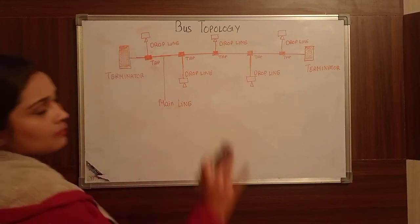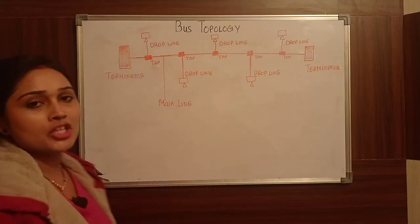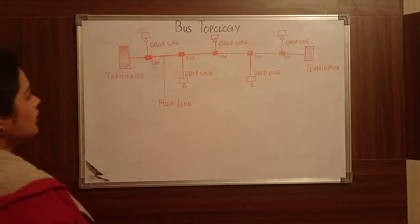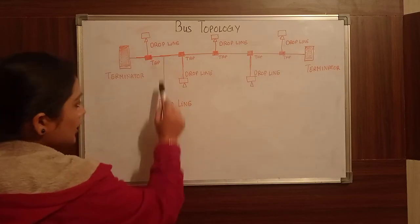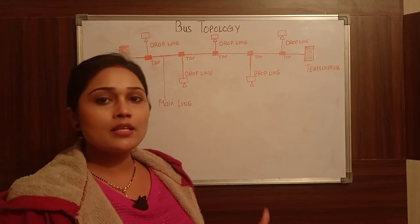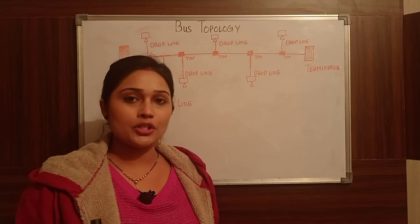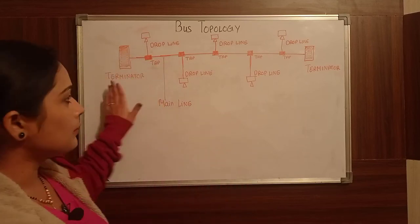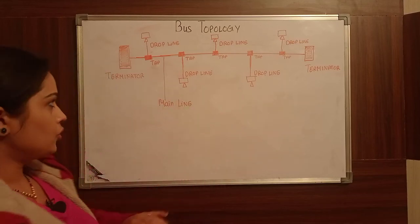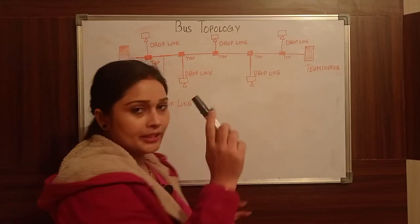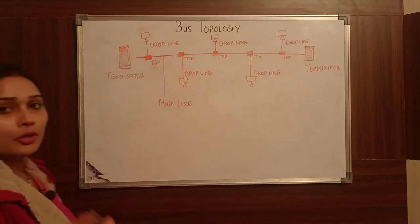In Bus Topology we have made a diagram to show how Bus Topology works. In this diagram we understand what Bus Topology is. First, we have a main line which is a single communication line. Two terminators are used — they are always added at the two ends.